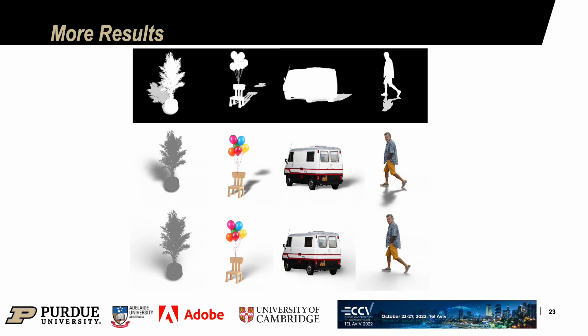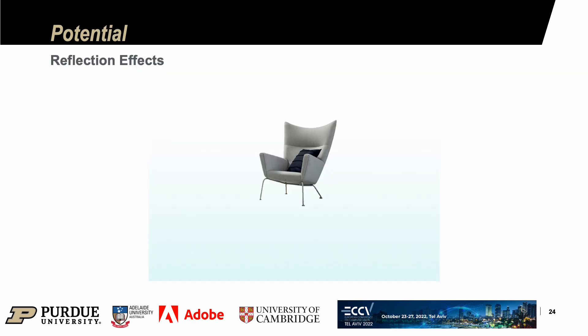Our method can render shadows for cutouts in different domains and different categories — for example, synthetic objects and cartoons, and no matter whether for general objects or humans. The pixel height representation can also be explored to render reflection effects for general objects.